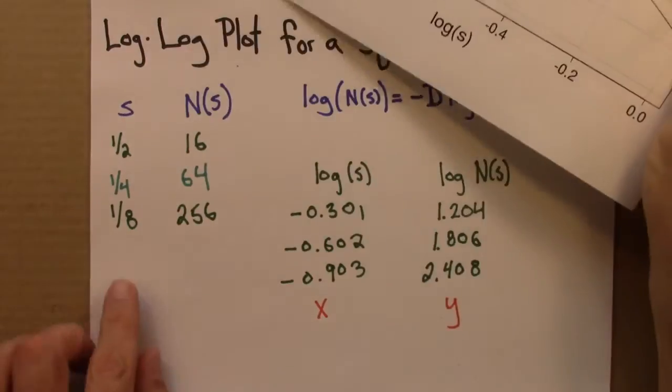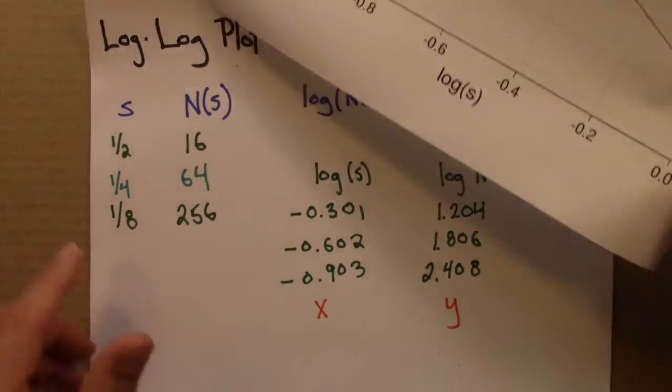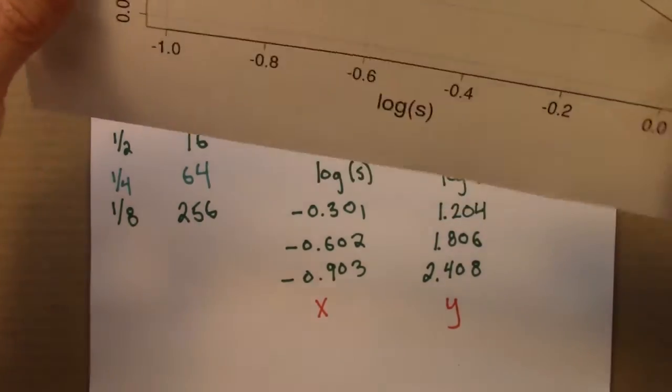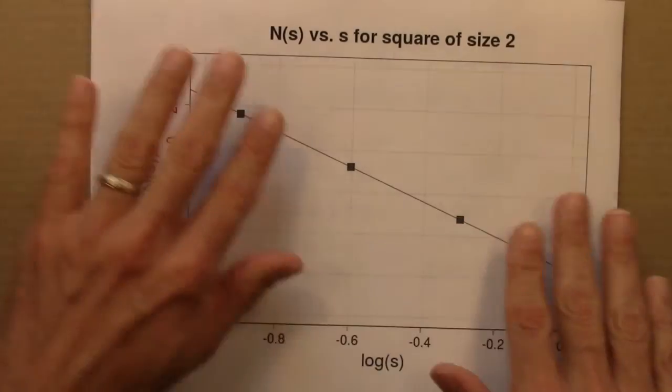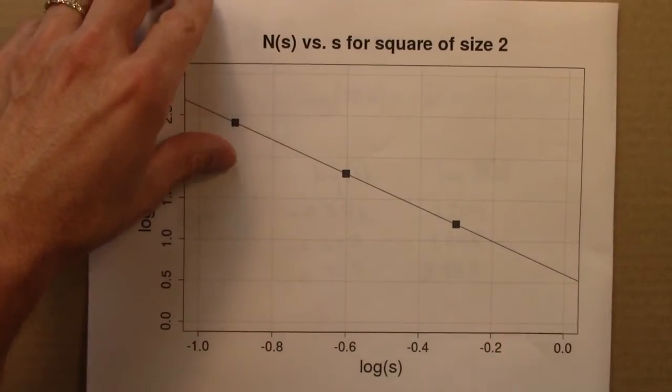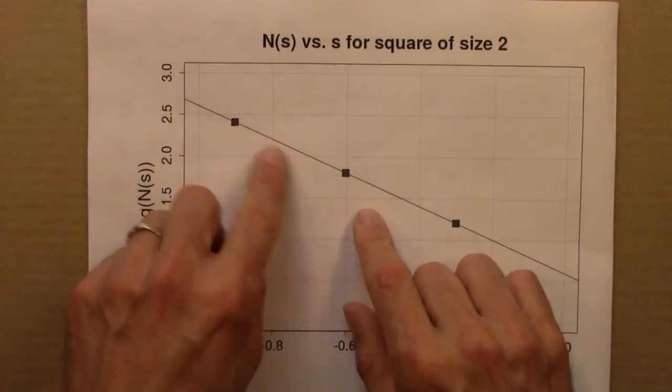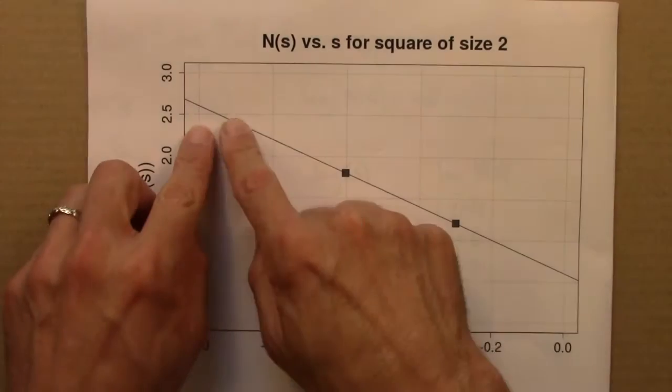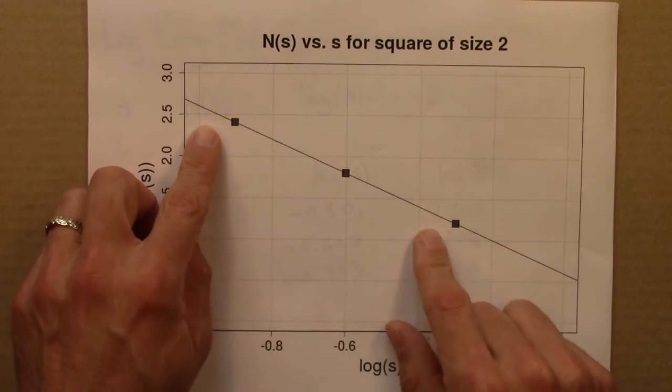We could have kept going, plotted a 16th or 32nd and so on. And we would get more and more points on the line. In a more realistic application, you'll probably want more data points. But for the square to illustrate this, I think this was plenty.